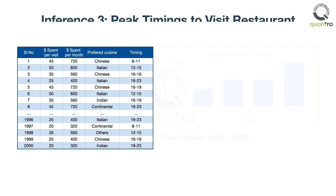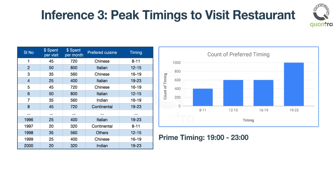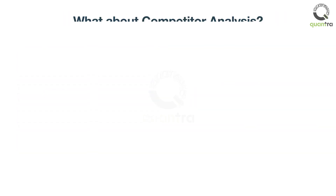You can plot a histogram — a frequency distribution graph — of the time during the day people prefer to go to a restaurant. With this analysis, you know which cuisine and which time during the day you should focus on.